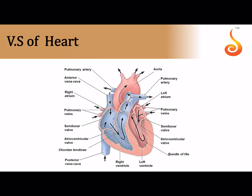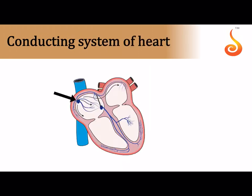The heart's upper chambers (atria) are thin: left atrium, right atrium. The lower chambers are the left ventricle and right ventricle. The valves between the atria and ventricles are the tricuspid valve on the right side and the bicuspid valve on the left side. The blood vessel from the right ventricle is the pulmonary artery, guarded by the semilunar valve. The systemic aorta originates from the left ventricle, also guarded by semilunar valves.